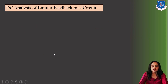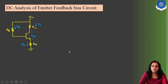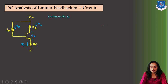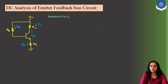So let us do the DC analysis of the emitter feedback bias circuit, and for that the circuit diagram is drawn again. As you already know, if you have watched the previous video, how to do the DC analysis. We are first finding the base current by applying KVL in the base loop, then calculating IC from the equation IC = β·IB, and at last applying KVL in the collector loop to calculate VCE. This is how we will find the coordinates of the quiescent point.